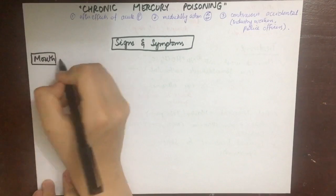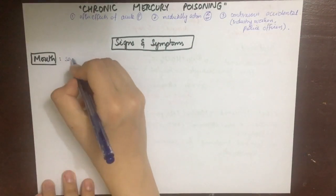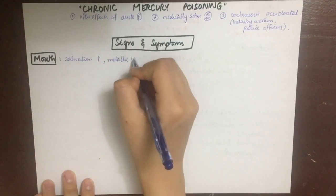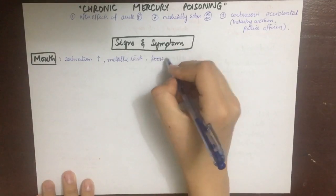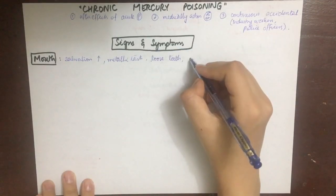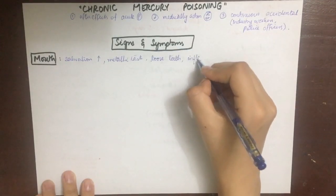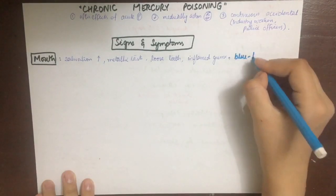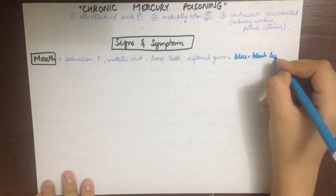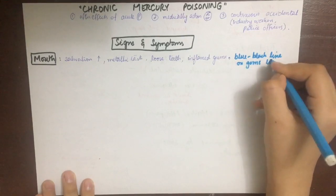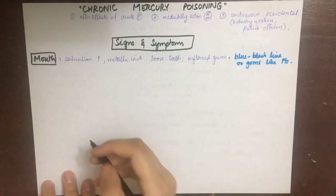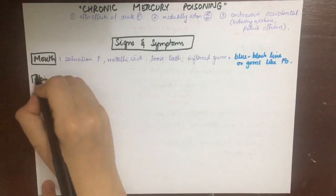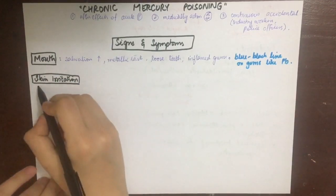The signs and symptoms of chronic mercury poisoning — organ and system wise — include in the mouth: excessive salivation, metallic taste, loosening of teeth, painful and inflamed gums, and a specific symptom: a blue-black line on the gums, similar to that seen in lead poisoning. There is also skin irritation if mercury is rubbed onto the skin.